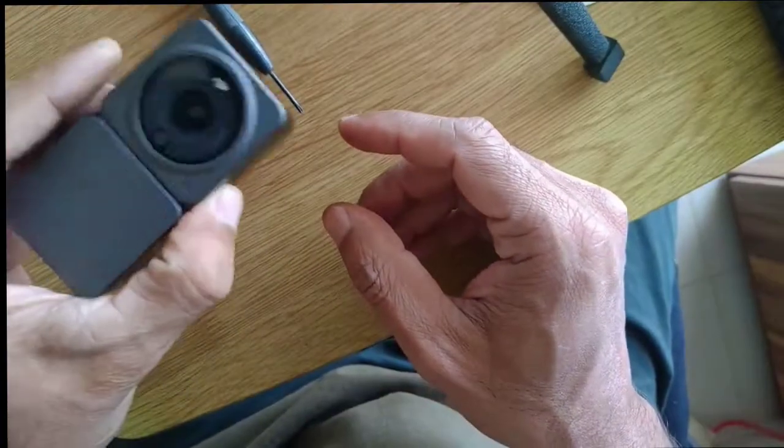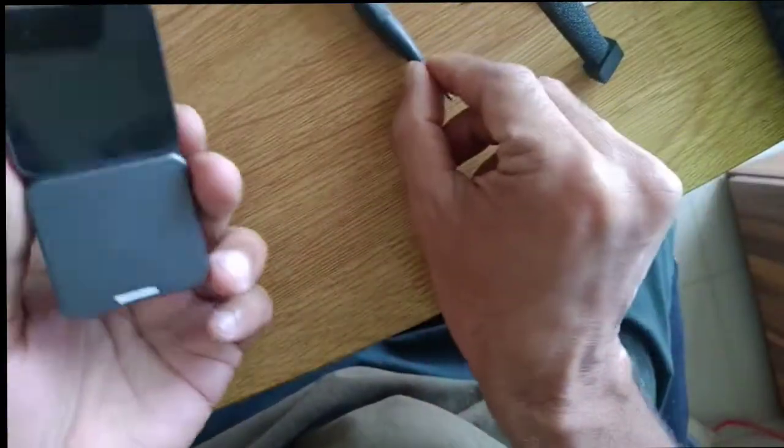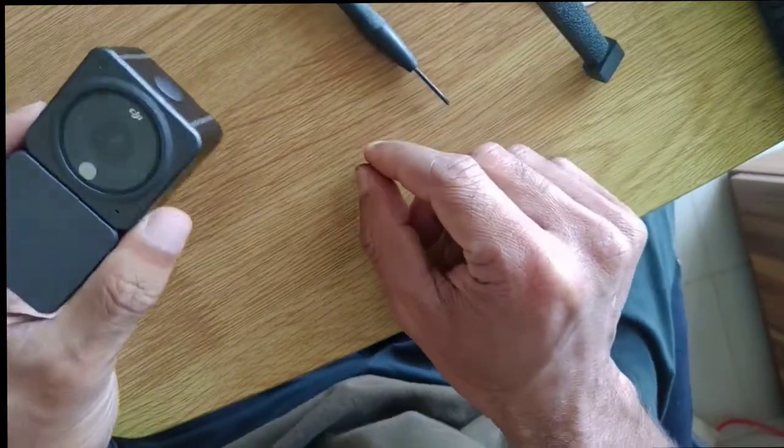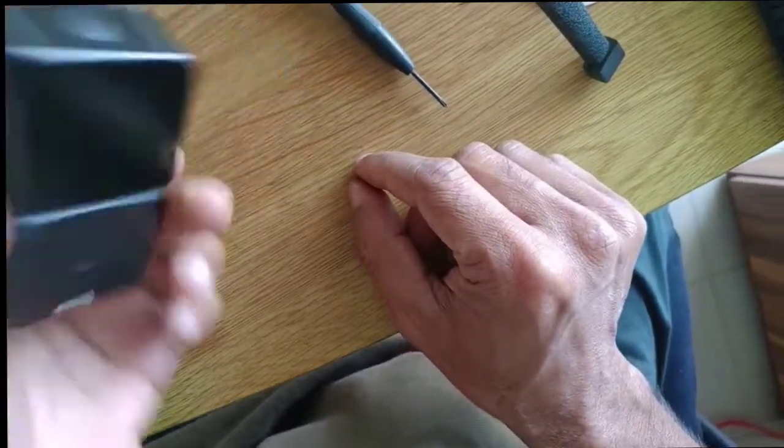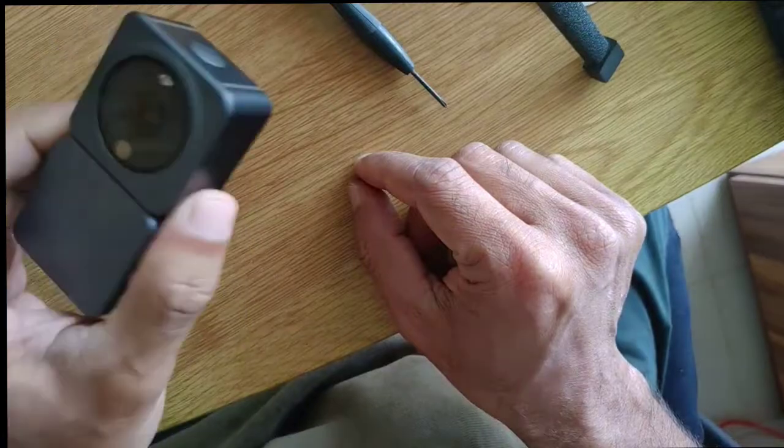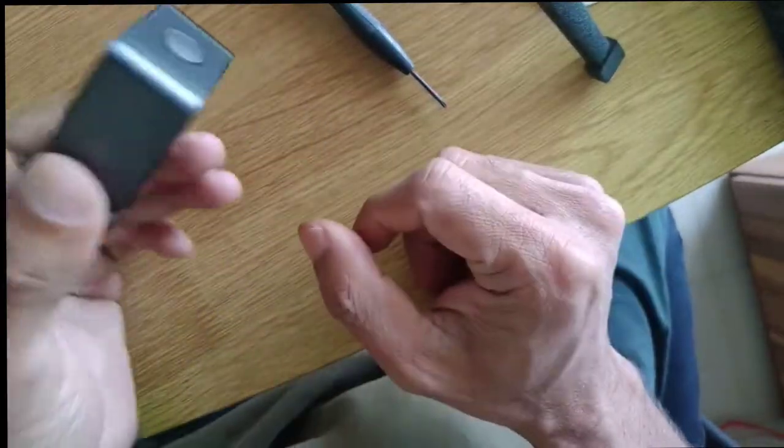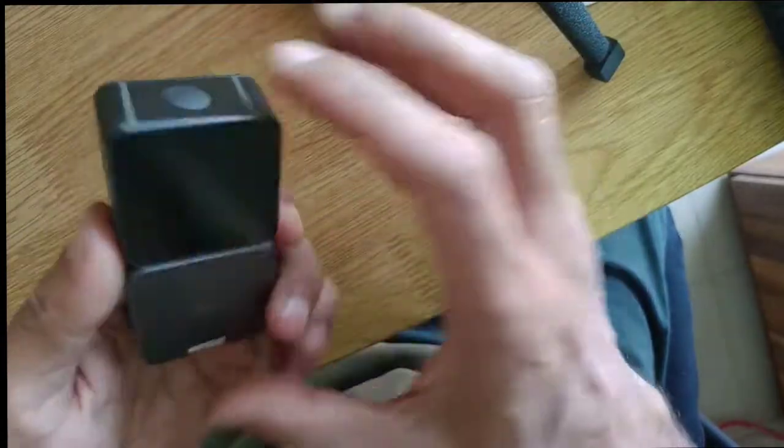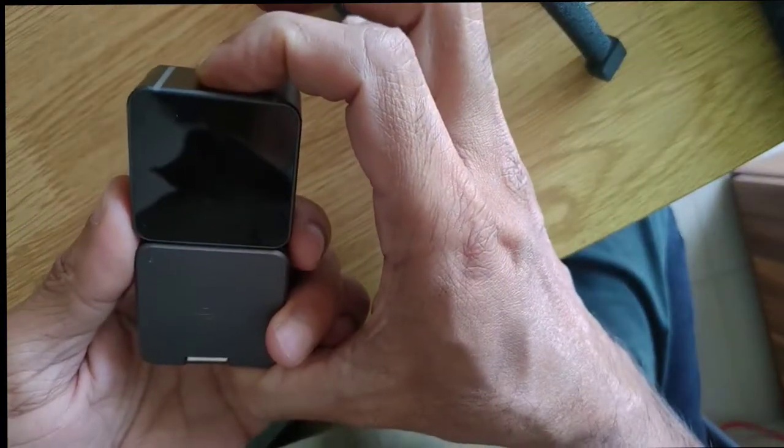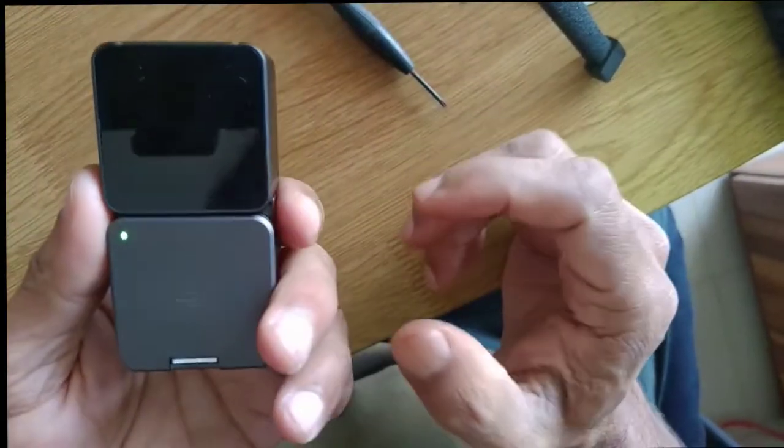So after buying this DJI Action 2 camera, I've been trying to experiment with lenses that I can put in the front of it and use this as a kind of a macro camera.